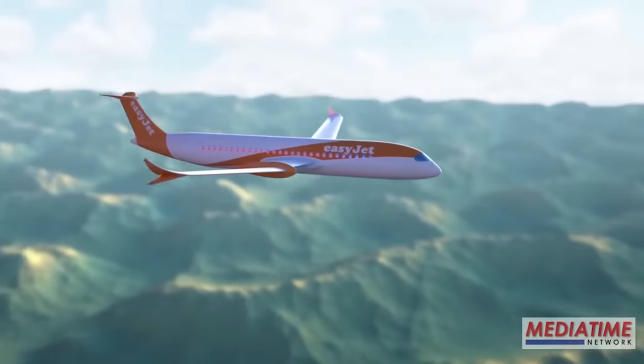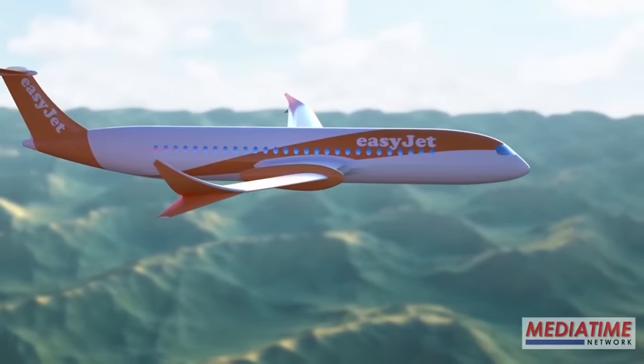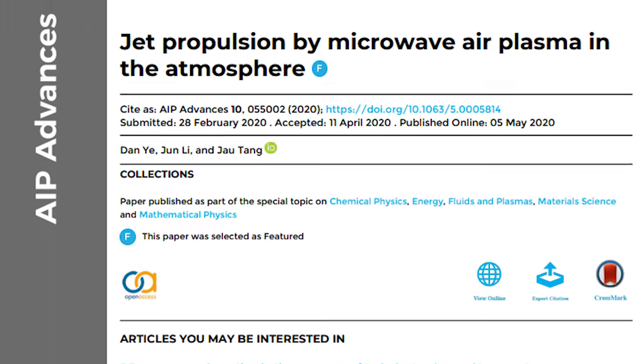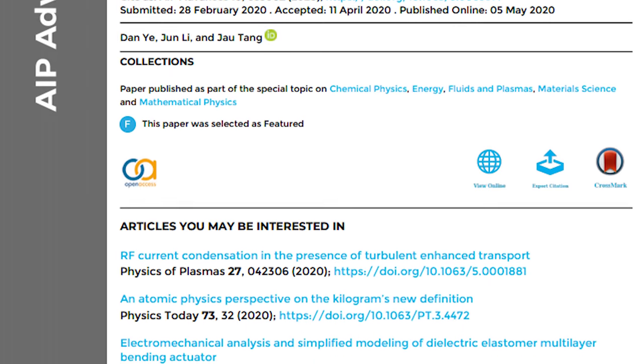So how can electrically propelled aircraft reach the level of thrust achieved by a conventional jet engine? Well, a team of researchers from Wuhan University think they may have found a possible solution.